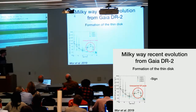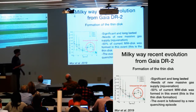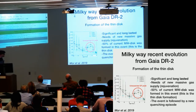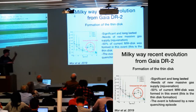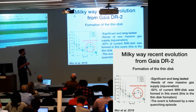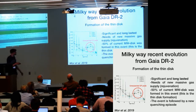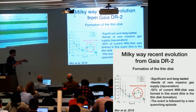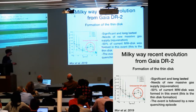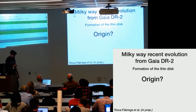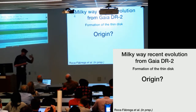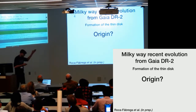Some properties of this star formation peak: it is very long-lasted — about three to four gigayears. To produce that in a disk like the Milky Way's, we need a very massive new gas supply — a kind of rejuvenation of the Milky Way in these last gigayears. Integrating the star formation rate over the enhanced period, this generated about 50% of the Milky Way disk, and this event was followed by a very strong quenching. We need some model to explain the origin of this.